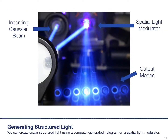Allow me to focus on non-vectorial structured light for now. We can generate higher order modes by taking an initial Gaussian, or an expanded flat wavefront beam, and reflecting it off, or perhaps passing it through, a hologram. It's obviously convenient if this hologram can be computer generated. This is what we see in this photo, where all the reflected orders are visible.